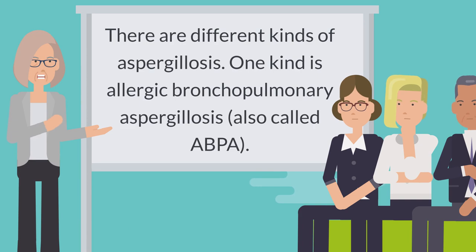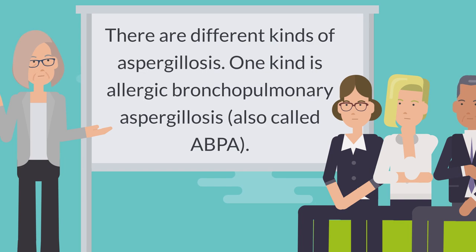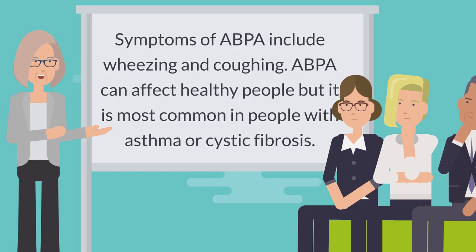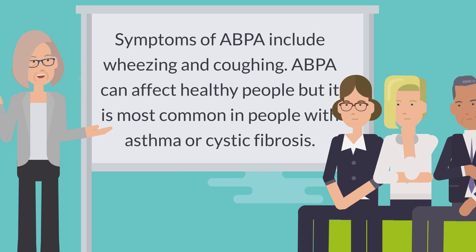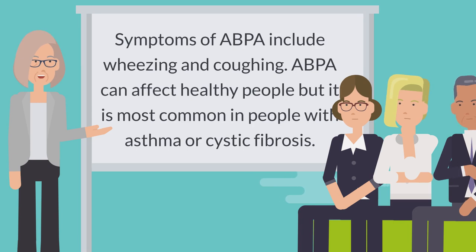There are different kinds of Aspergillosis. One kind is allergic bronchopulmonary Aspergillosis, also called ABPA. Symptoms of ABPA include wheezing and coughing. ABPA can affect healthy people, but it is most common in people with asthma or cystic fibrosis.